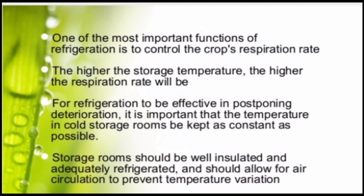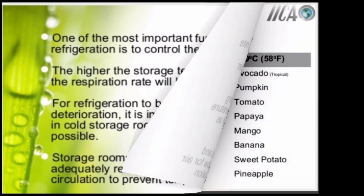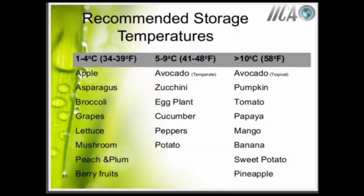For refrigeration to be effective in postponing deterioration, it is important that the temperature in cold storage rooms be kept as constant as possible. Storage rooms should be well insulated and adequately refrigerated, and should allow for air circulation to prevent temperature variation. Recommended storage temperatures: 1 to 4 degrees Celsius (34 to 39°F) for apple, asparagus, broccoli, grapes, lettuce, mushroom, peach and plum, and berry fruits.